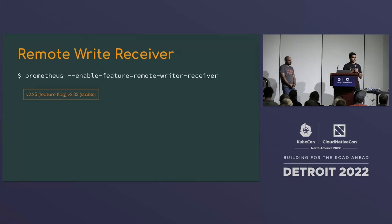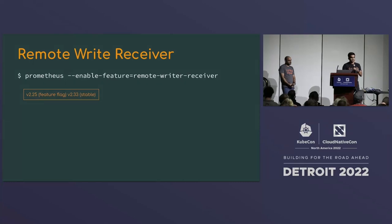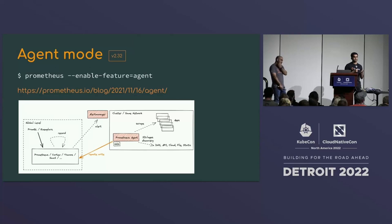Prometheus has a remote write feature where you can configure it to send all collected data to remote storage like Thanos or Cortex for long-term storage. In version 2.25, Prometheus gained the ability to receive remote write data — so one Prometheus can remote-write into another. In version 2.33, this was declared stable, though you still need to enable it via a feature flag.